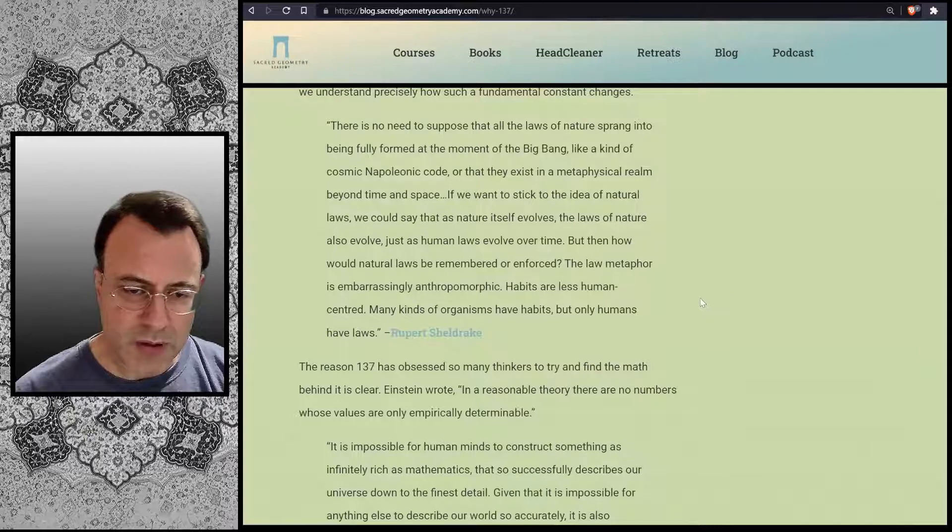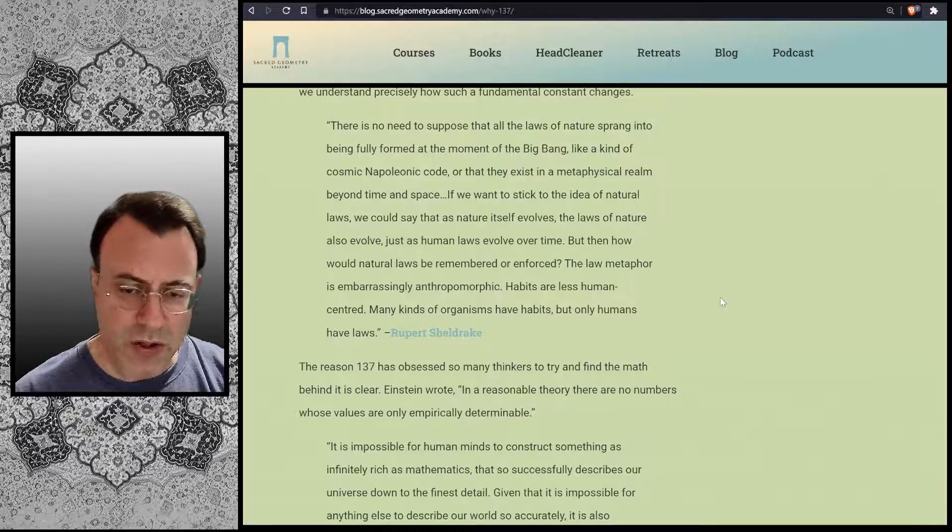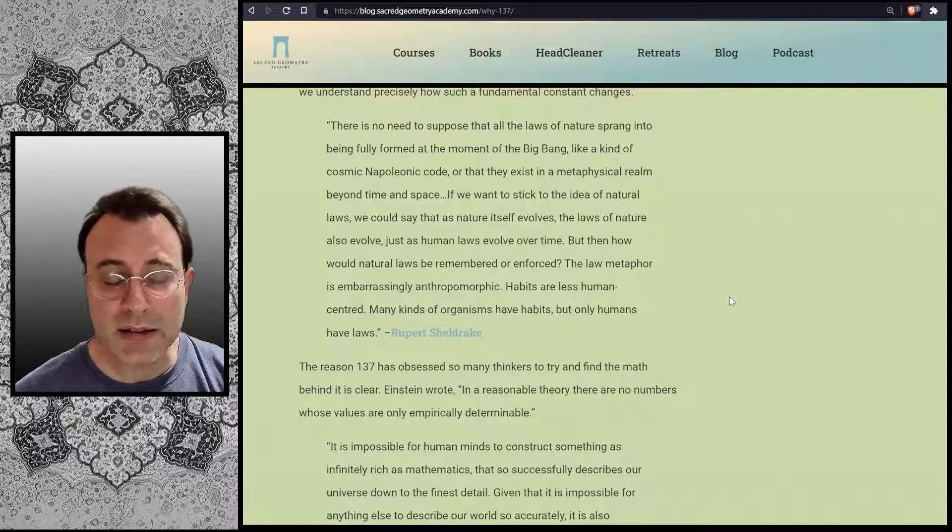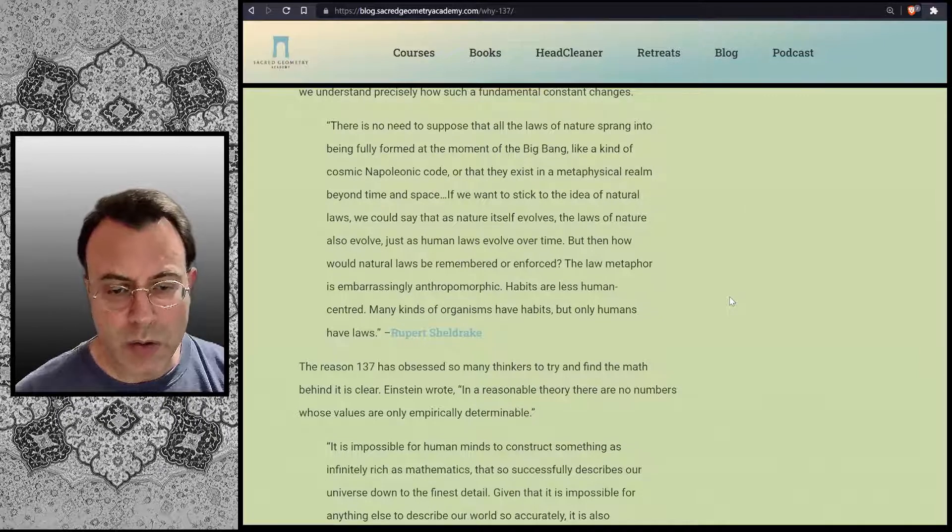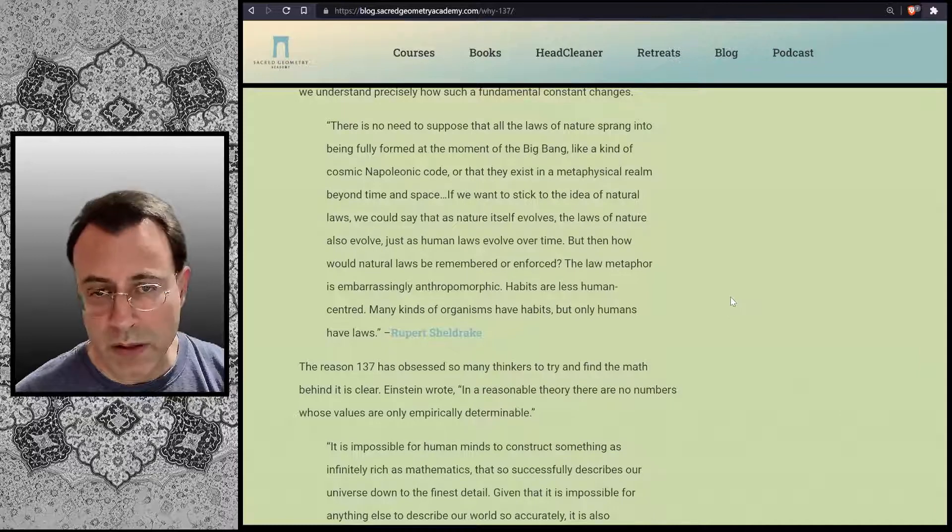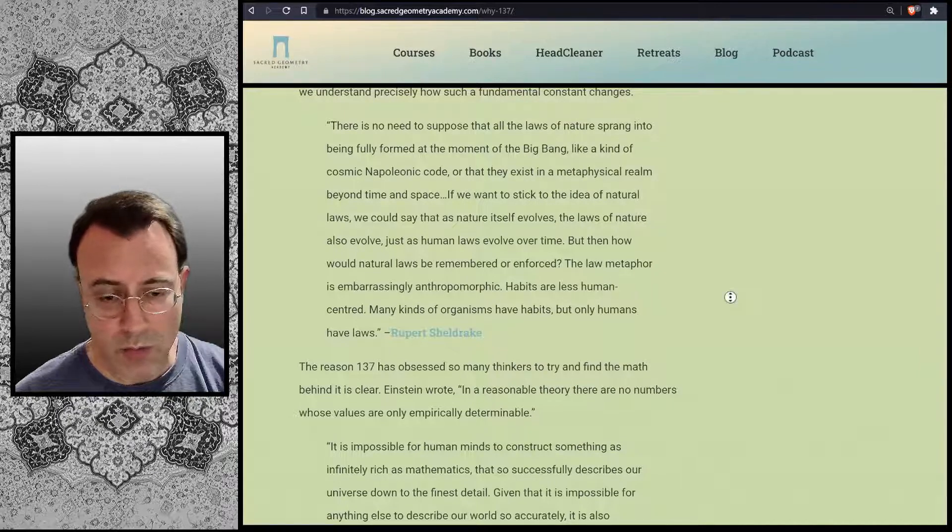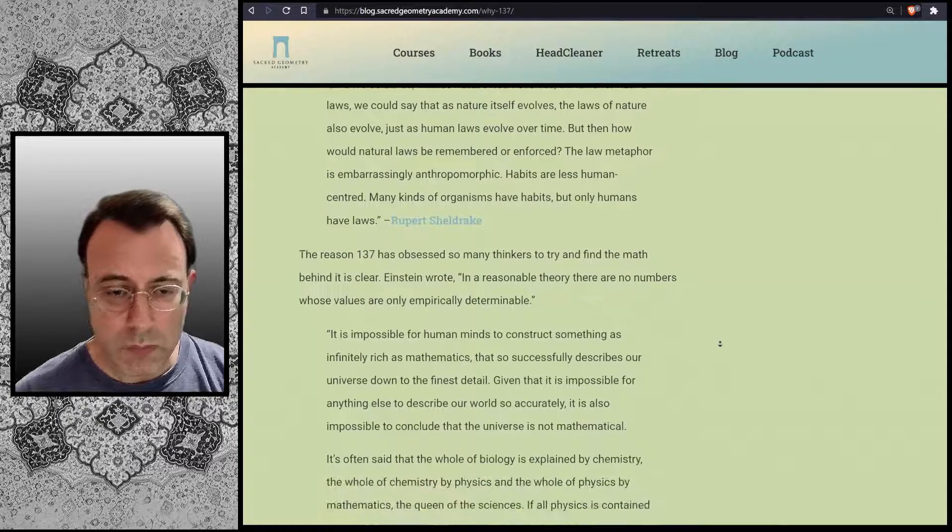The reason 137 has obsessed so many thinkers to try and find the math behind it is clear. Einstein wrote: "In a reasonable theory, there are no numbers whose values are only empirically determinable."